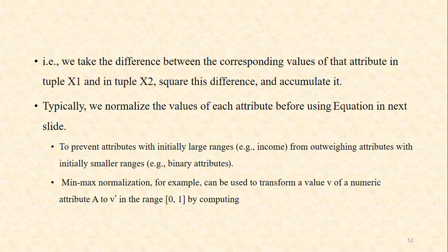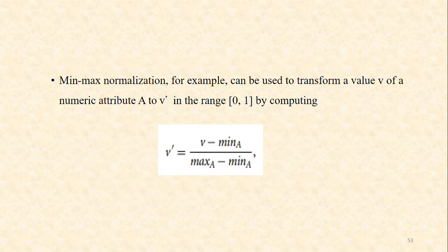Here we consider min-max normalization, which transforms the value v of a numeric attribute A to v' in the range 0 to 1, by computing: v' = (v − min_A) / (max_A − min_A), where min_A and max_A are the original minimum and maximum values of attribute A.